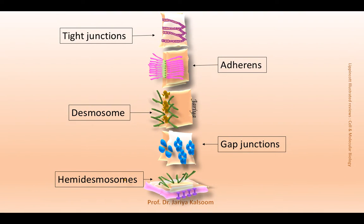Cells are joined with extracellular matrix and with each other by cell adhesion molecules, which are anchored to the plasma membrane. Collections of these molecules form cell junctions that hold the cells together. These junctions are classified according to their functions.